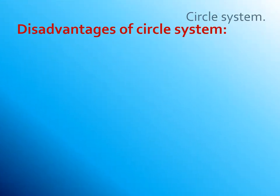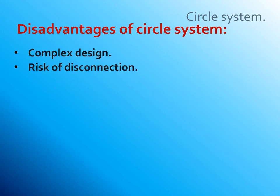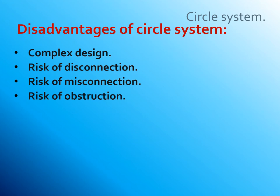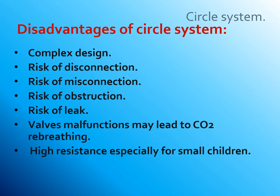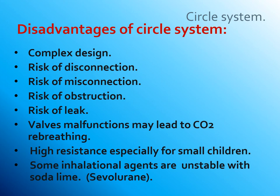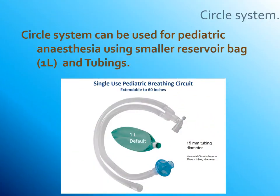Disadvantages of the circle system: complex design, risk of disconnection, risk of misconnection, obstruction, risk of leak, valve malfunction, and high resistance — especially for small children. Some inhalation agents are unsuitable with soda lime, such as sevoflurane, which may produce a toxic mixture through chemical reaction. The circle system can be adapted for pediatric anesthesia using a small one-liter reservoir bag and smaller tubing.